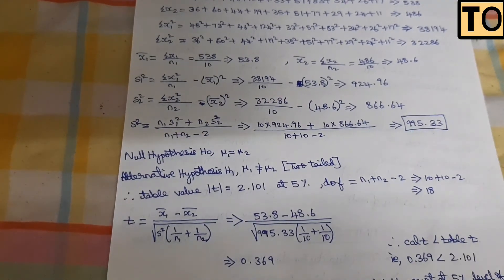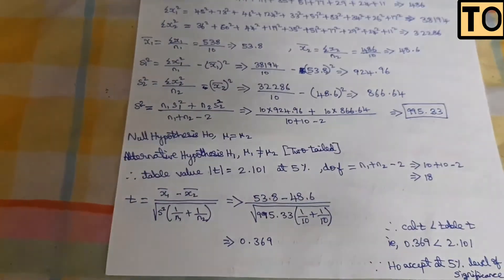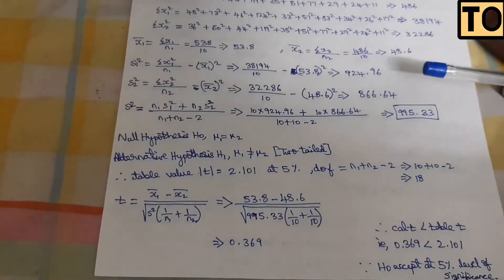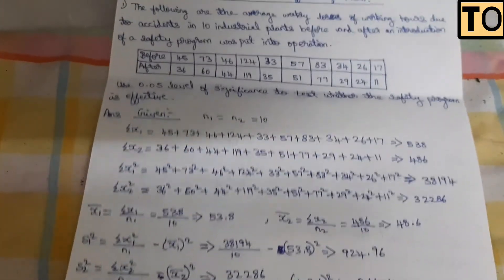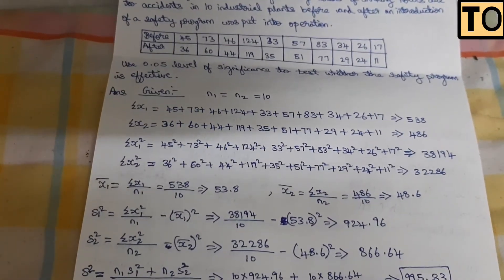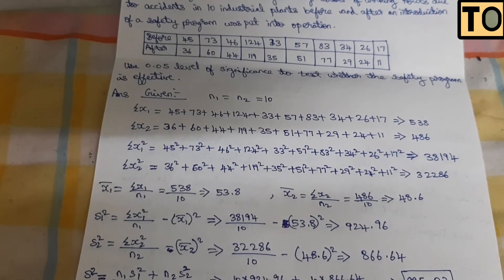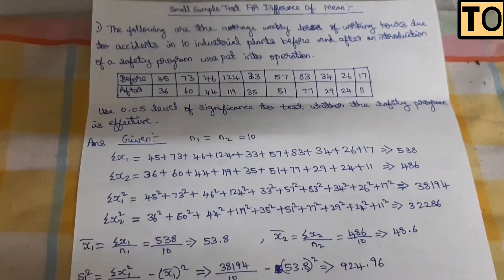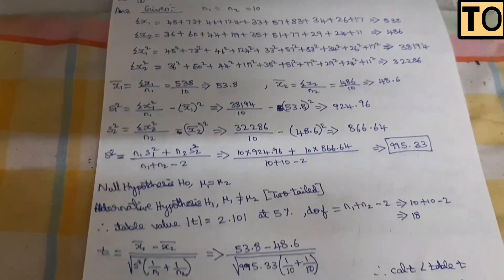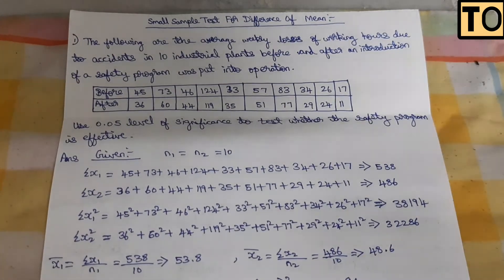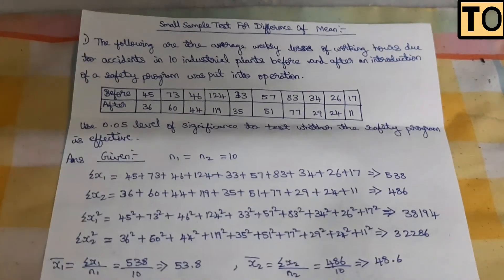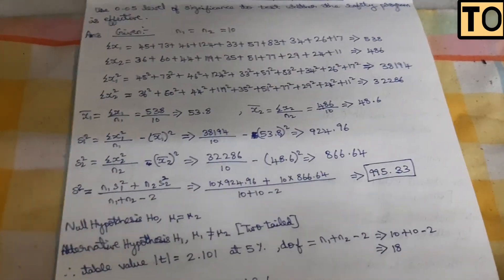Since the calculated value of t is less than the table value, we accept H0 at the 5% level of significance. The conclusion is that the safety program is effective.